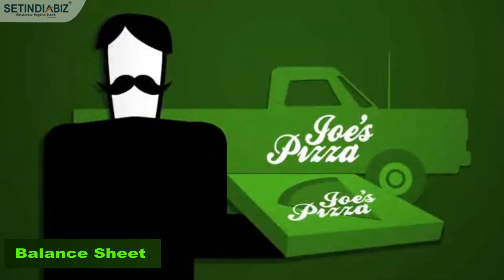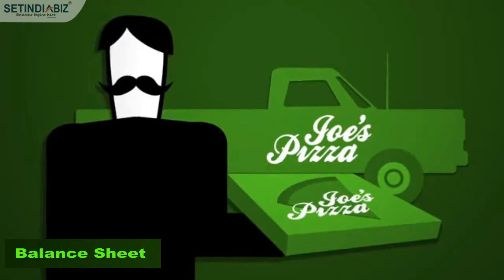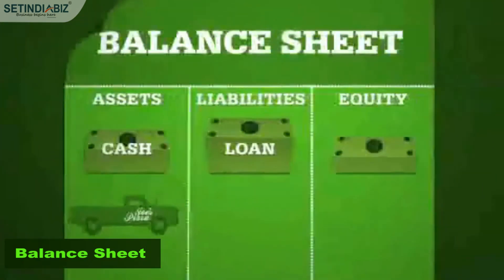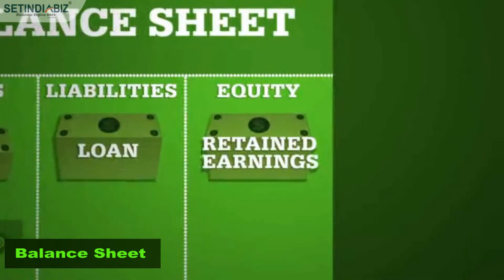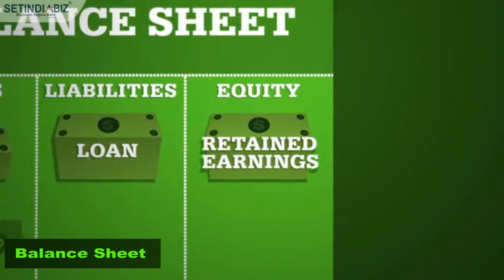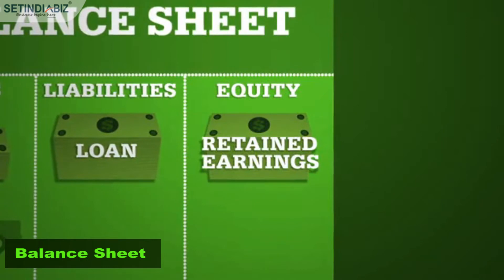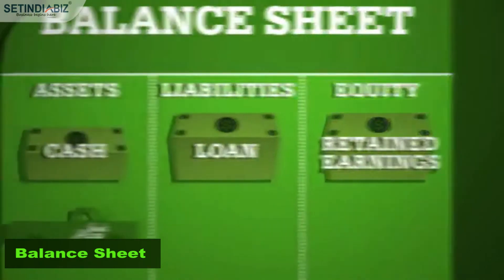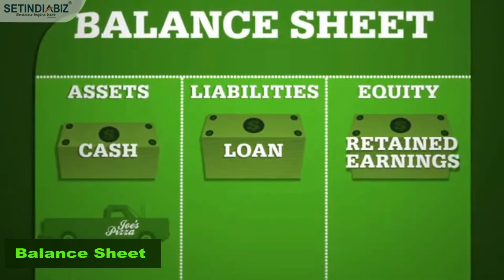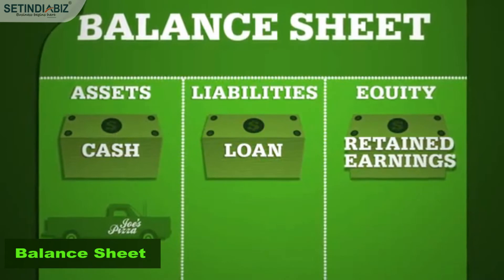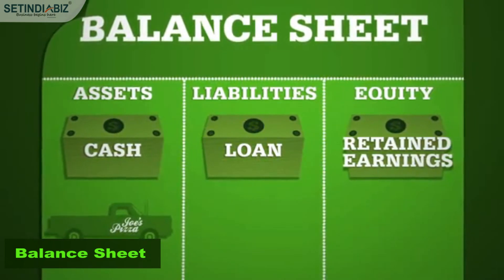As Joe delivers pizza, the profit is recorded in the balance sheet as retained earnings in the equity section. The cash from his profits is recorded in the assets section, balancing out.